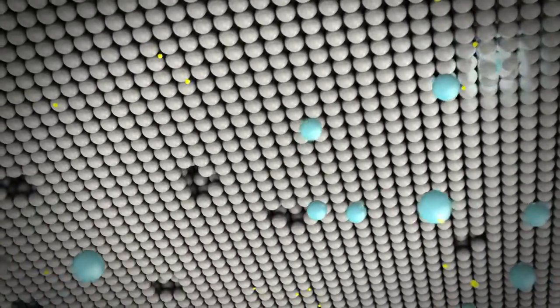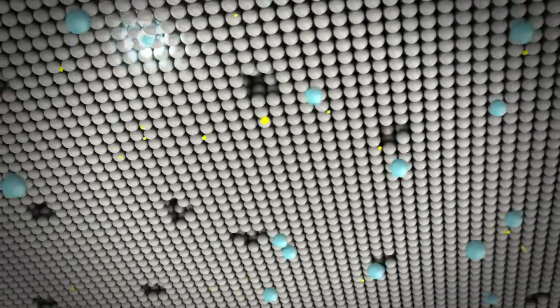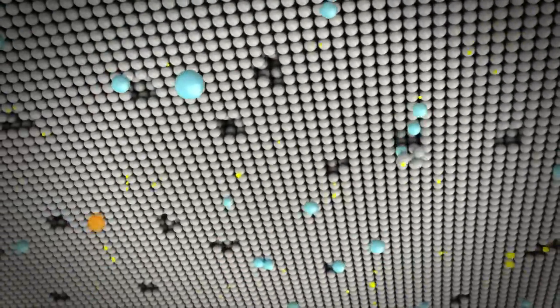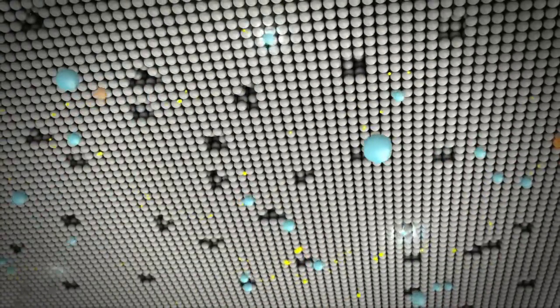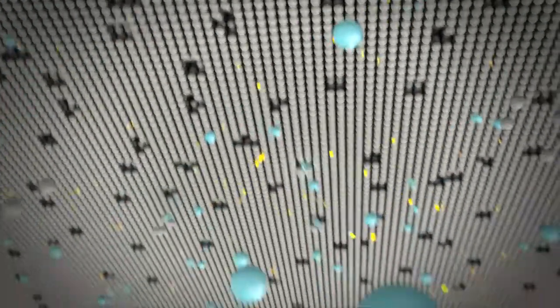Let's see what happens. The argon ions collide with the target and eject molybdenum atoms from its surface. This is what the sputtering process is all about. In a way, it resembles a game of billiards, don't you think?